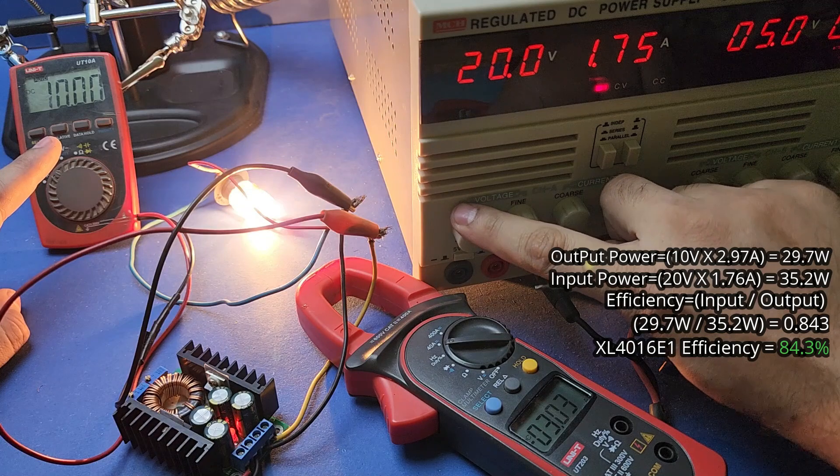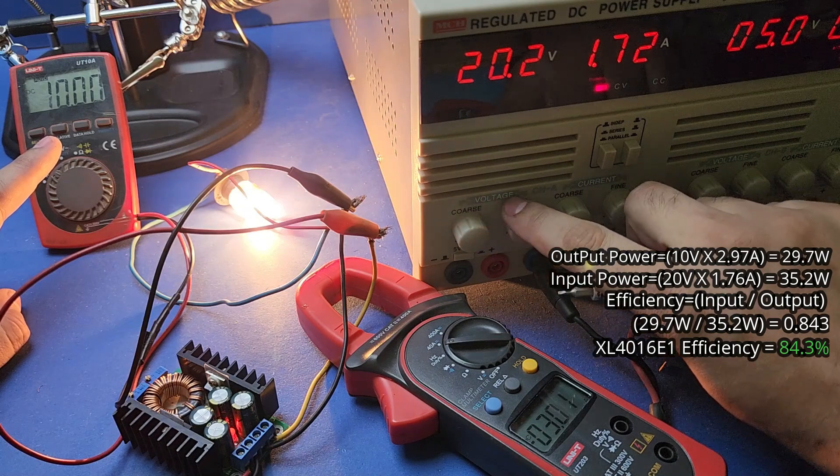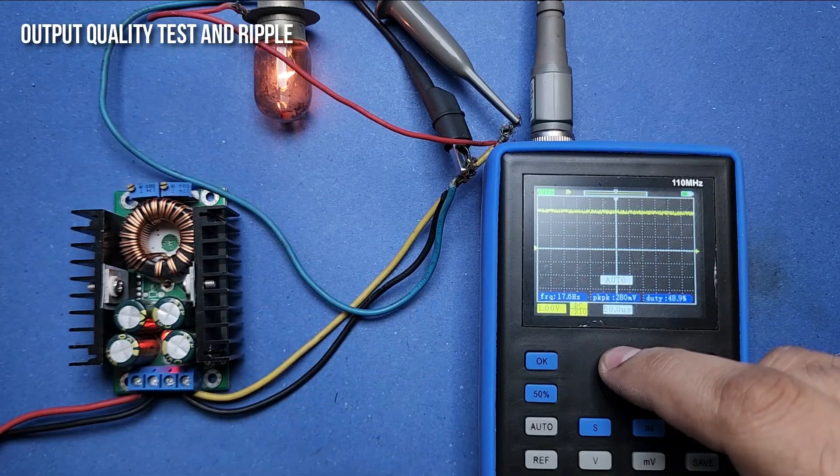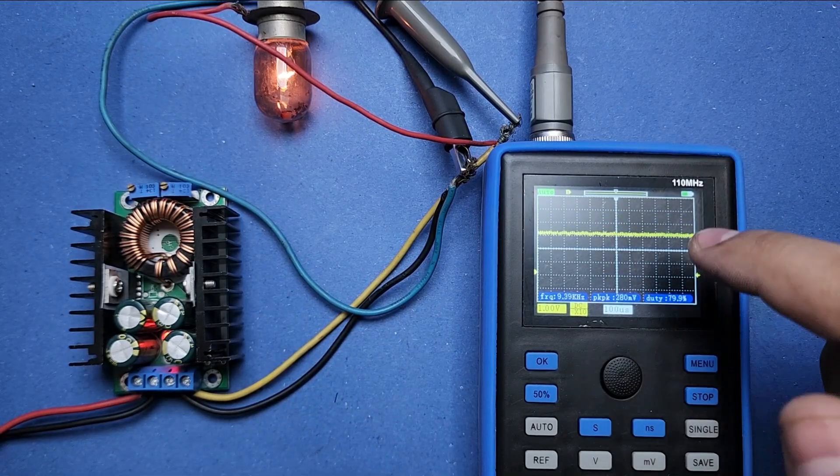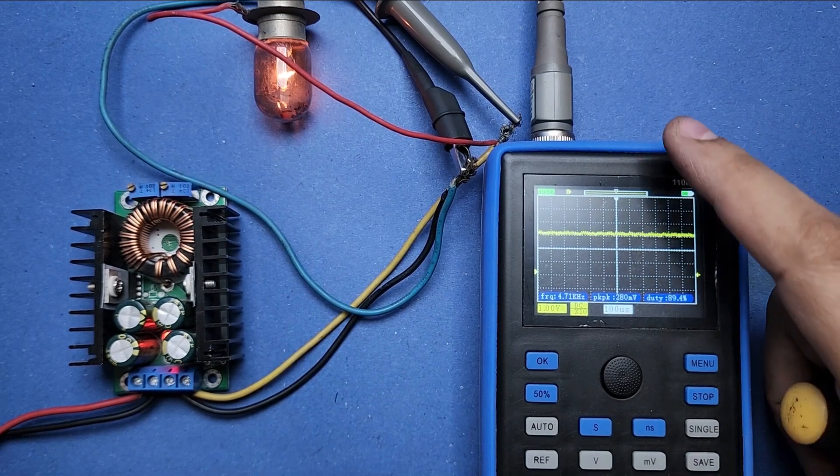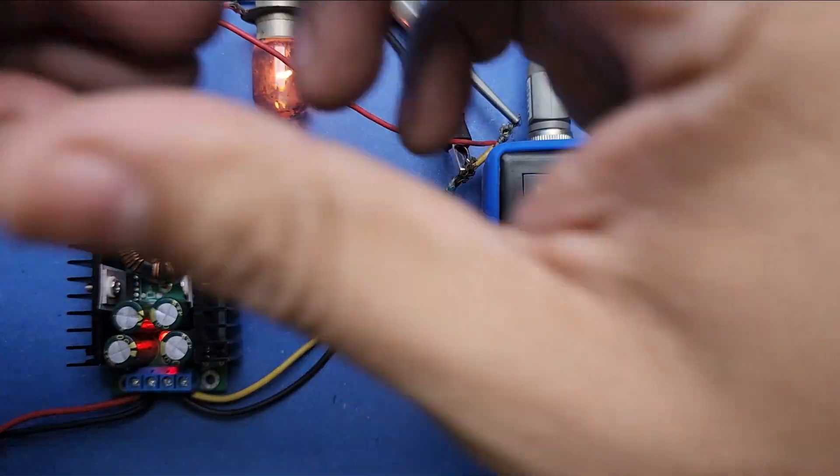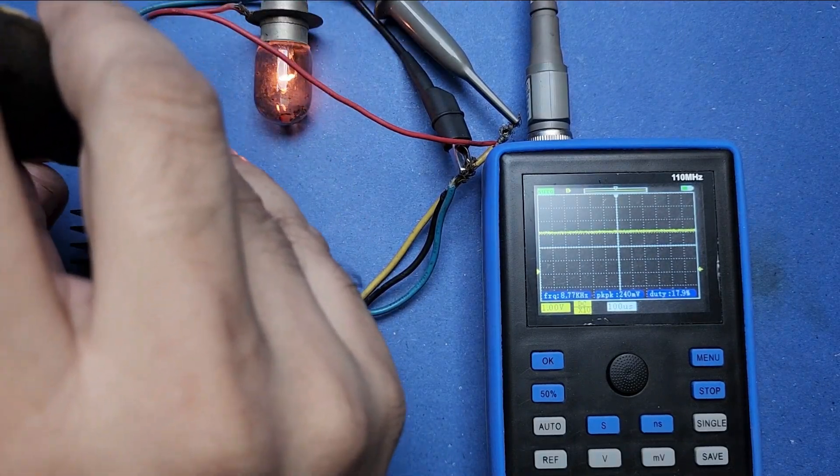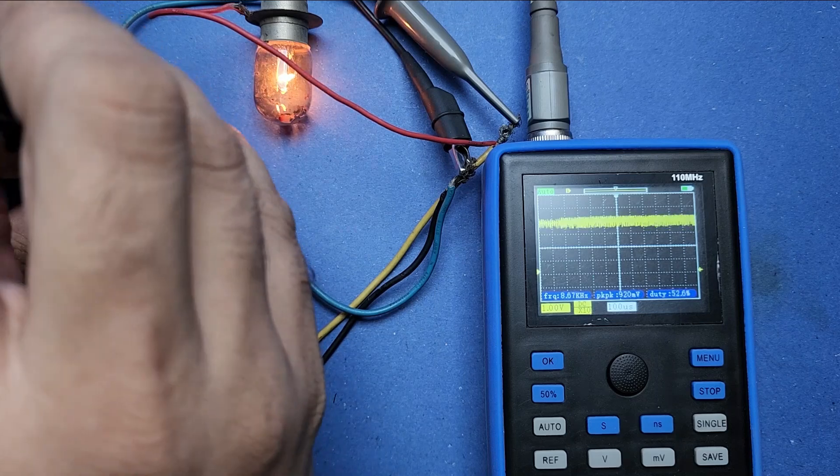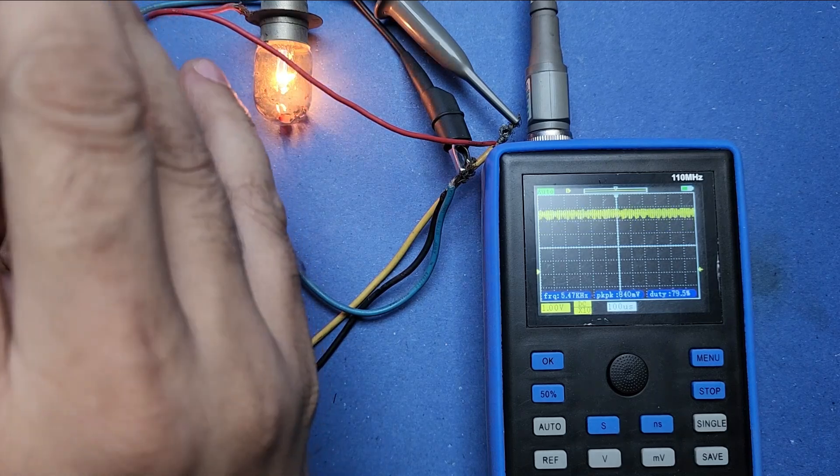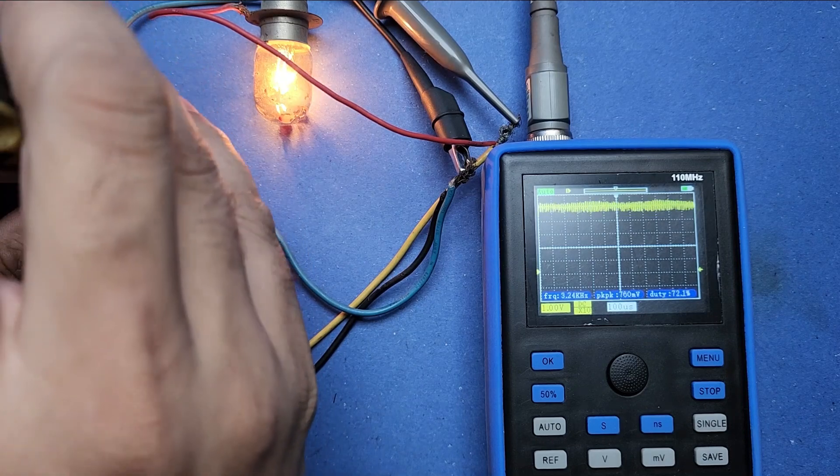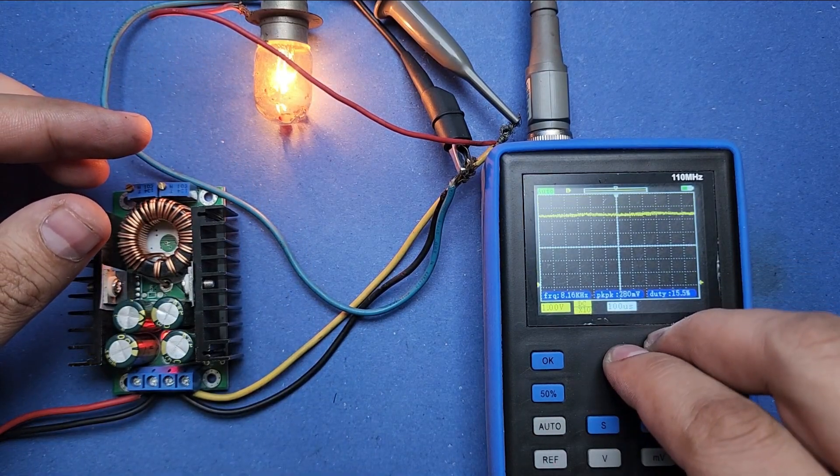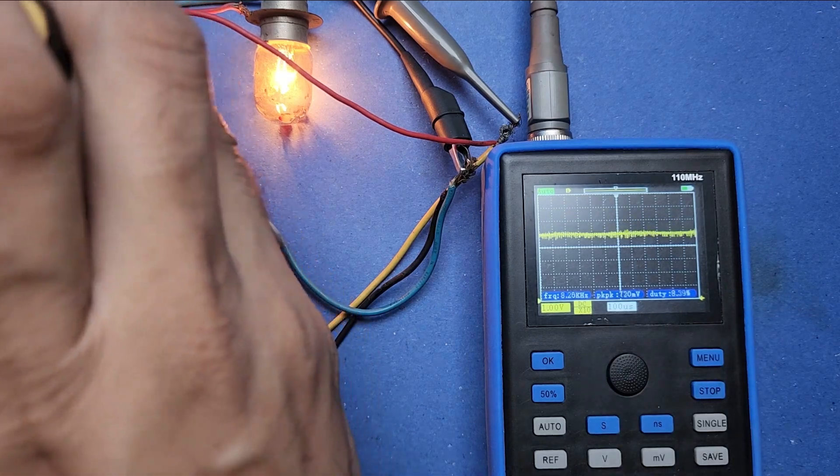Now let's check the output quality of XL4016 module using an oscilloscope. I have noticed a constant ripple in its output which changes with the output current. I am now increasing the output current and you can clearly see that the ripple is also increasing. The peak ripple is measured at around 100 millivolt on full load. It is not a concern while powering most devices but it can still be an issue for radio transmitters and receivers.